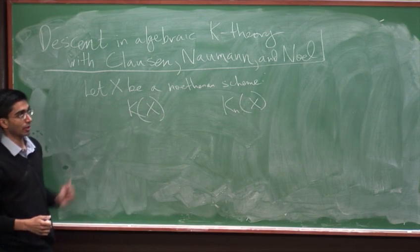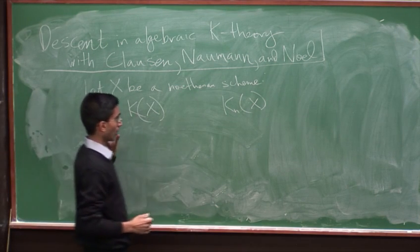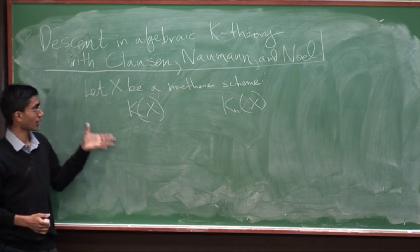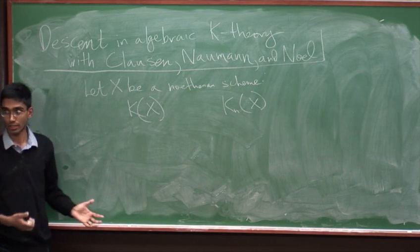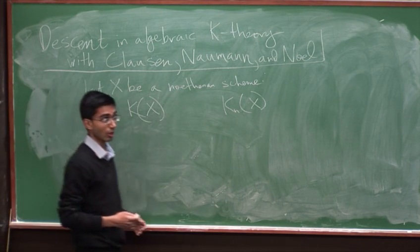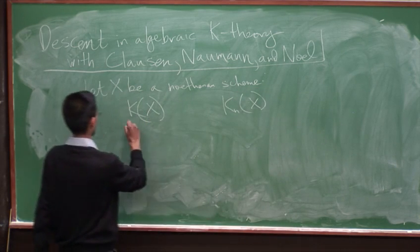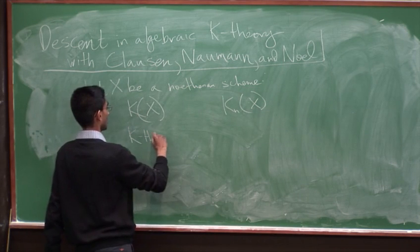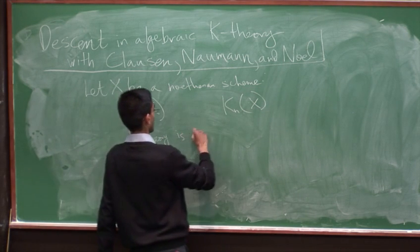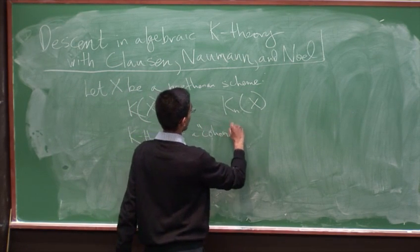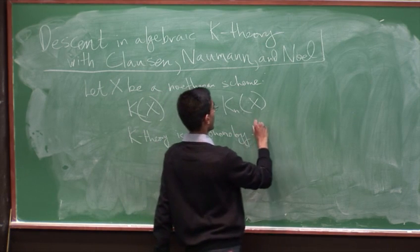And in general, we don't know how to compute this. But one analogy that we might keep in mind in thinking about computing this is that algebraic K-theory is something like a cohomology theory on the category of schemes. So what does that mean? Well, so first of all, it's a contravariant functor.